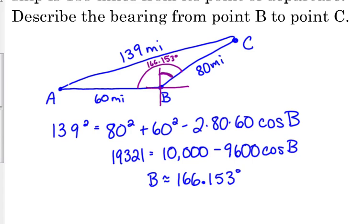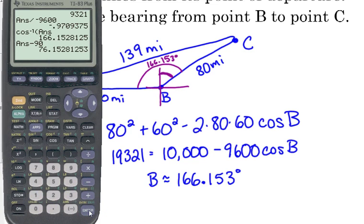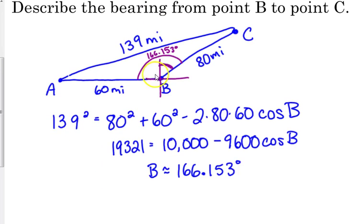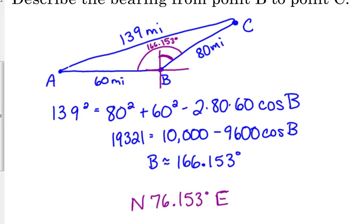So that little angle right there is 76.153. Now that would be what? What would be the directions? North? East. Okay, that would be north 76.153 degrees east.